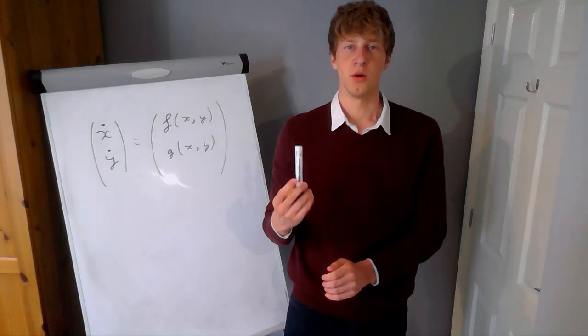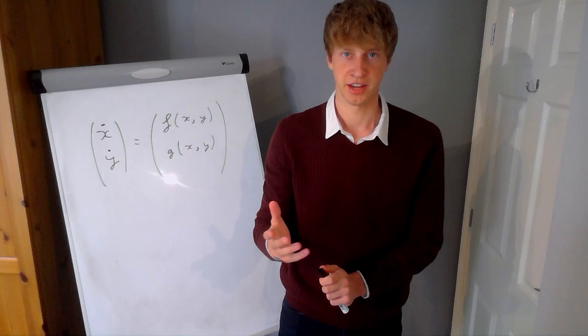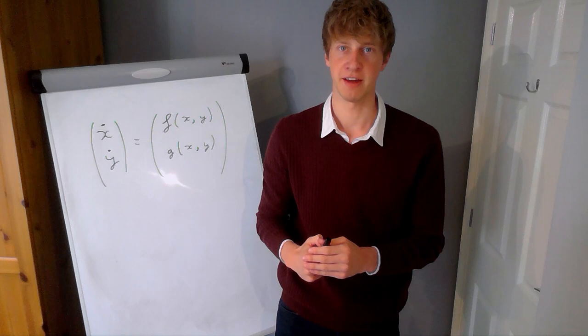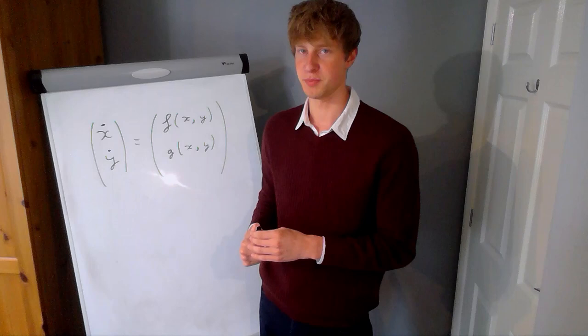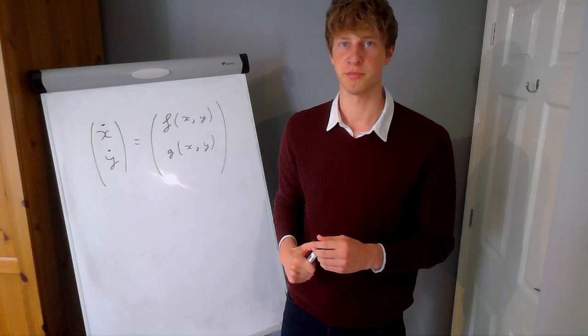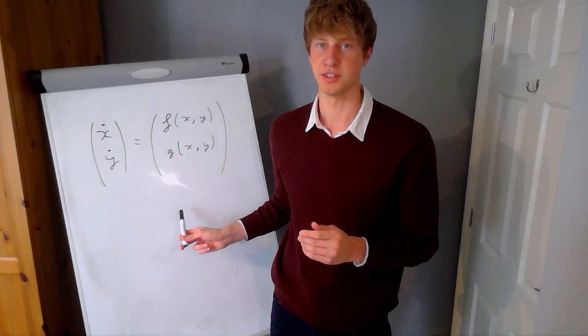So far we've only talked about systems in one dimension and studied bifurcations and critical slowing down for dynamical systems in which the state is only given by one variable. Today we're going to be talking about what happens when we move into two dimensions, because the stability around fixed points becomes a lot more complicated. We'll see different kinds of bifurcations, and even in two dimensions, the phenomenon of critical slowing down can still be seen.